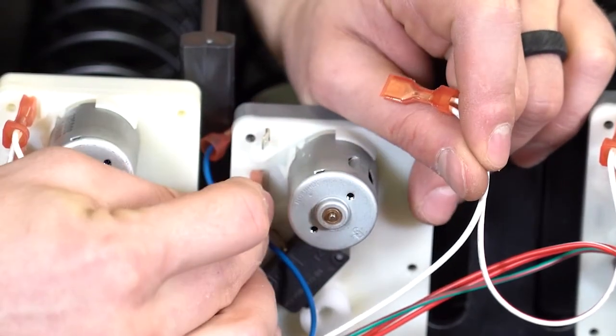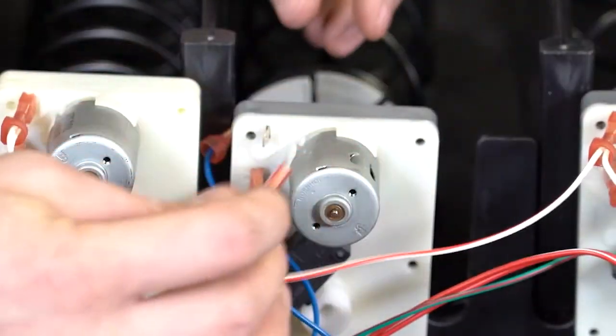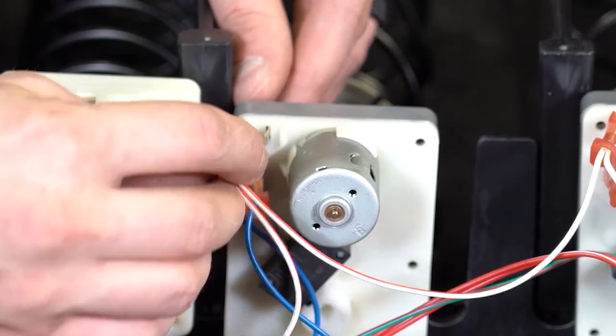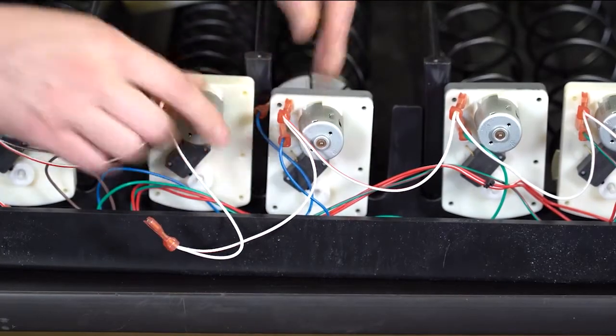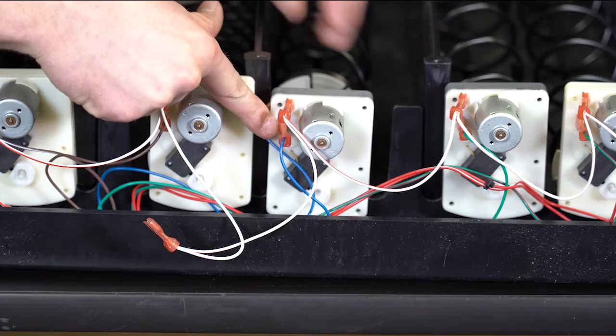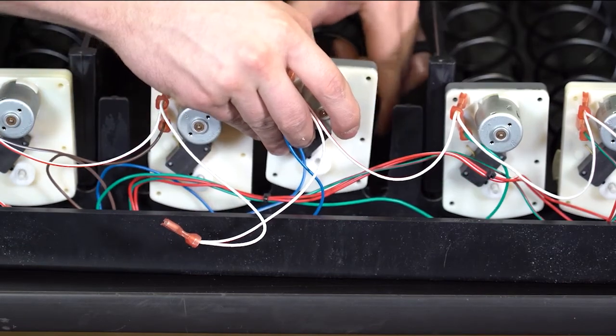Place the new motor in the tray and attach the wires where they belong. The motor specific wire, in this case blue, goes just beneath the red and white common wire. Connect the coupler back onto the motor.